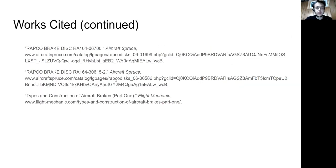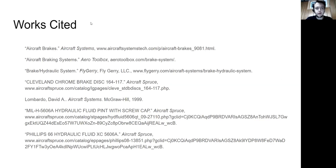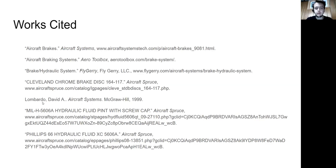For works cited, I used an article called Aircraft Brakes by Aircraft Systems at aircraftsystems.tech.com, another article called Aircraft Braking Systems by Aerotoolbox at aerotoolbox.com, and an article called Brake/Hydraulic System by Fly Jerry at flyjerry.com. For pictures I used Aircraft Spruce, including a Cleveland Chrome brake disc 164117 at aircraftspruce.com. For most of my information I used the aircraft systems book written by David A. Lombardo.